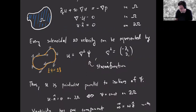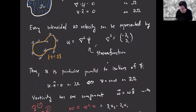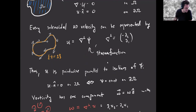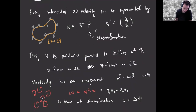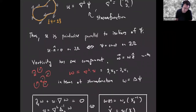Another simplification in two dimensions is that an important quantity in fluids, the vorticity, is structurally much simpler than in 3D. The vorticity is the curl of the velocity field. If the three-dimensional velocity field has a two-dimensional symmetry — namely the third component is zero and the first two depend only on x and y — then the curl is just a z-component, pointing out of the page. You can identify it with the scalar prefactor, which is the grad-perp divergence of the velocity.